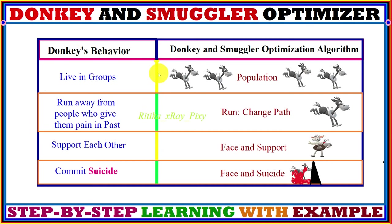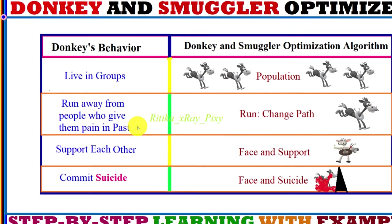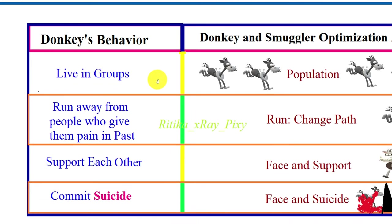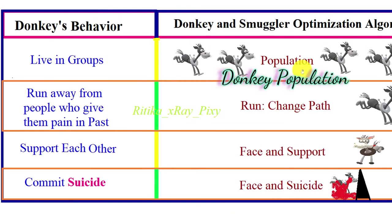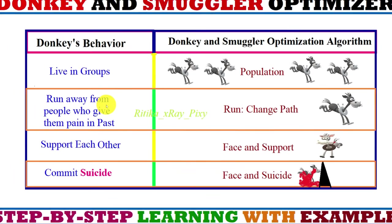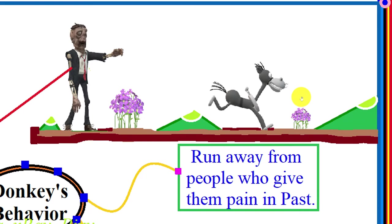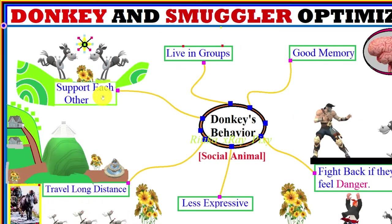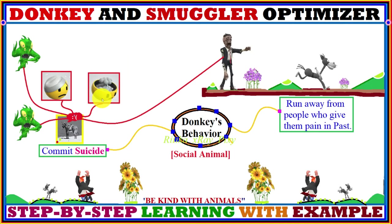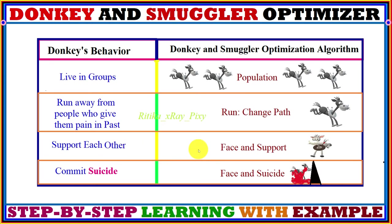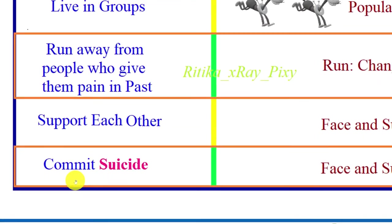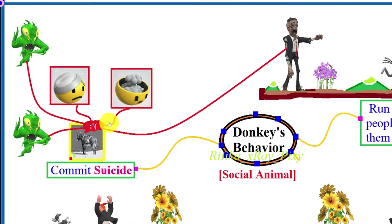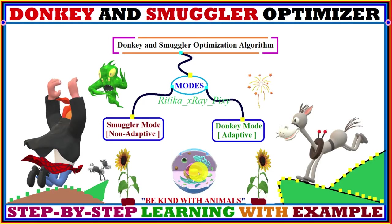In this algorithm, different donkey behaviors are implemented to find the optimal solution. Since donkeys live in groups, the group is considered as the population size. Their behavior of running away from people who caused them pain is implemented as run mode, causing the donkey to change path. Their friendly support behavior is implemented as face and sport, and the commit-suicide behavior is implemented as face and suicide.